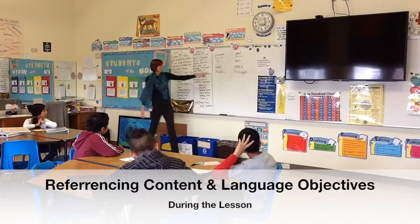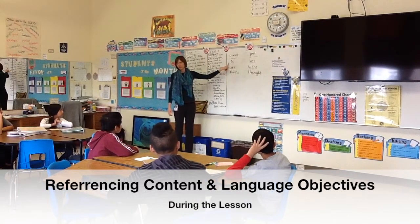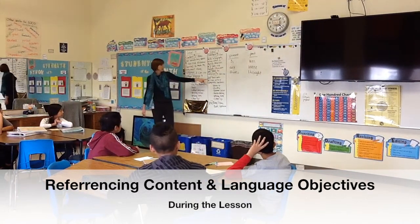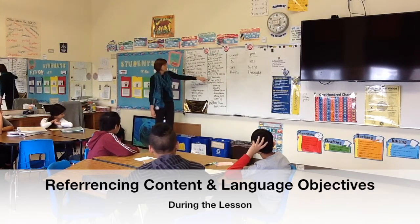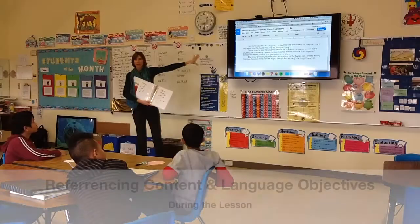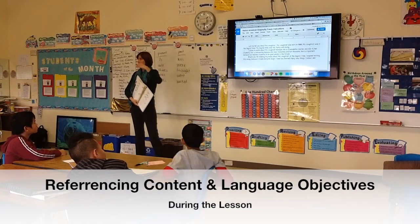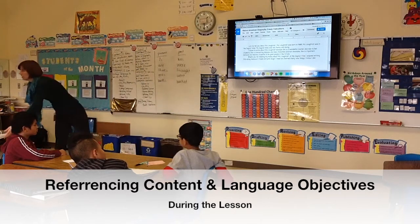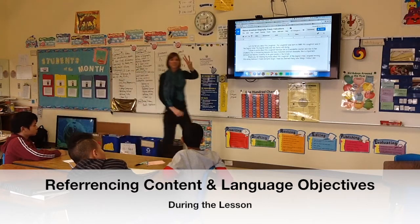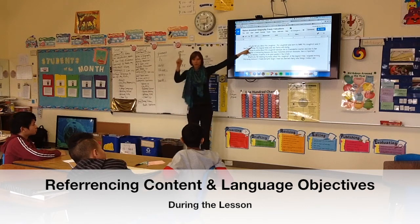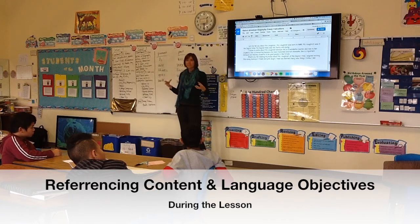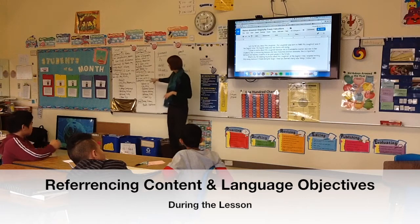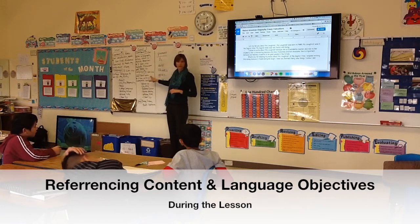A quick grammar lesson. Fifth period already gave you some answers. If our objective is I can use past tense verbs — then we have 'is' and 'was.' But I want you to write more. I want to see your writing, your ideas. So I will say add three sentences: one sentence in the first paragraph, one sentence in the second paragraph, and one sentence in the third paragraph. Then I can see your writing. I can see if you are using past tense verbs, like our language goal.